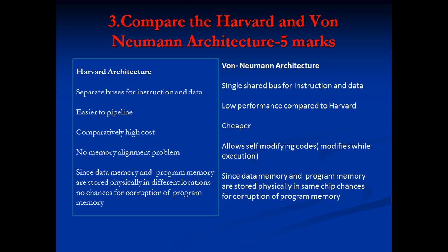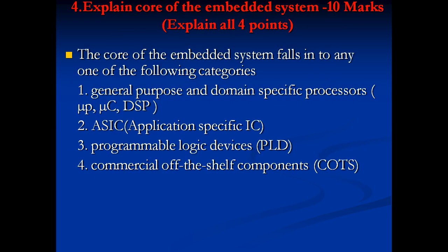Harvard architecture has no memory alignment problems. Von Neumann architecture allows self-modifying code — it can modify code during execution. In Harvard architecture, since data memory and program memory are stored in physically different locations, there is no chance of corruption of program memory. In Von Neumann, using a single shared bus for program and data, there is a chance of corruption of program memory.